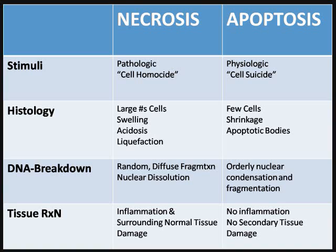In apoptosis, the organelles remain normal. The cells break down into membrane fragments known as apoptotic bodies, which are then phagocytized by neighboring phagocytic cells. The DNA breakdown in apoptosis is orderly — nuclear condensation and eventual fragmentation. Tissue reaction shows no inflammation and no secondary tissue injury. Thank you very much and I hope you enjoy this review. Cheers.